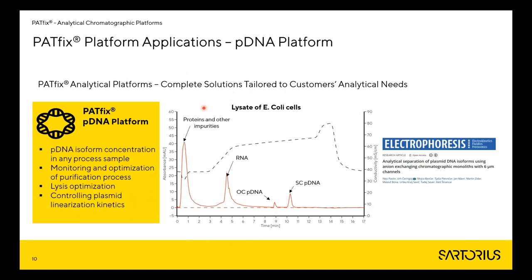Here is one example of how a chromatogram using this method looks. This is an example of lysate of E. coli cells in which plasmid DNA was produced. It is a quite complex sample containing a lot of different species and impurities. In the flow-through, proteins and other impurities are eluted. We have RNA elution, and at the end our analyte of interest, pDNA. We can see that the isoforms of this plasmid are nicely separated, so in every step of plasmid production we know the exact concentration of individual plasmid isoforms.